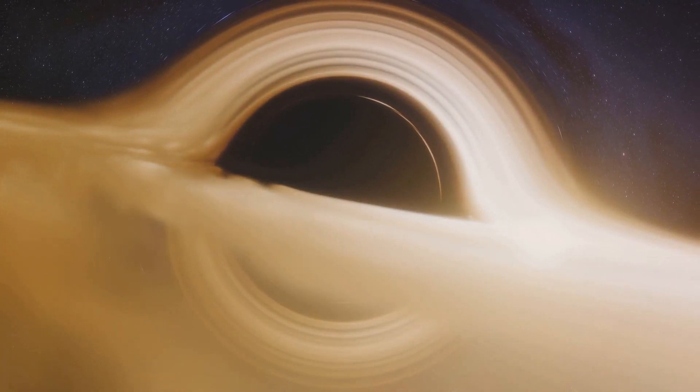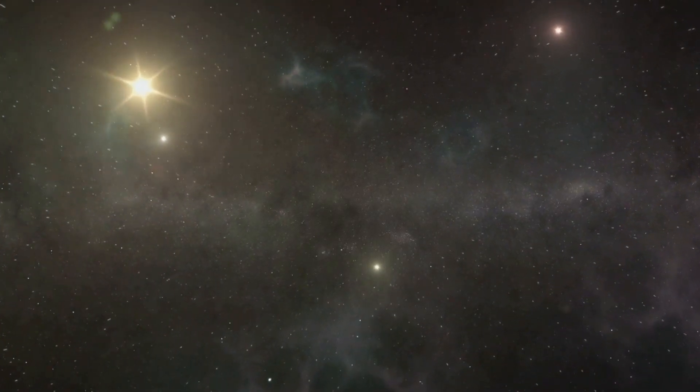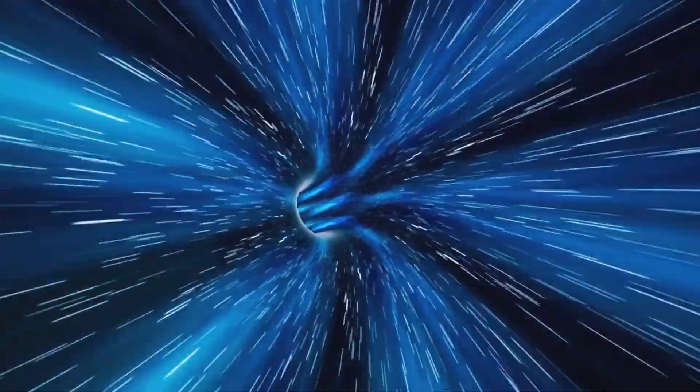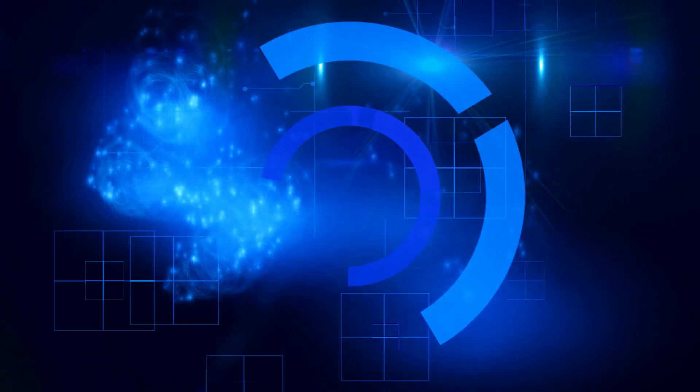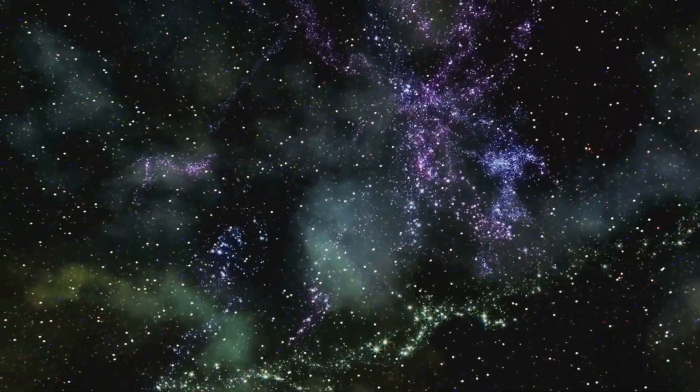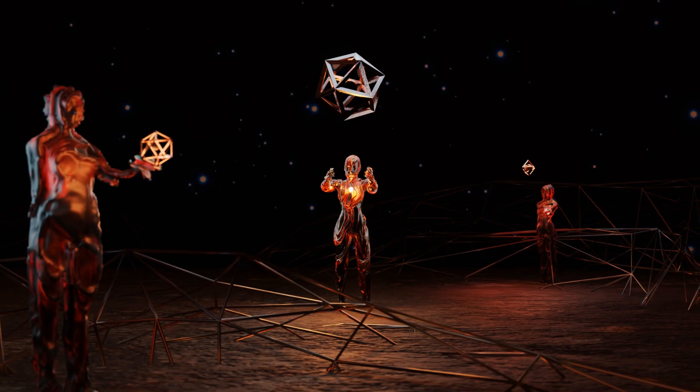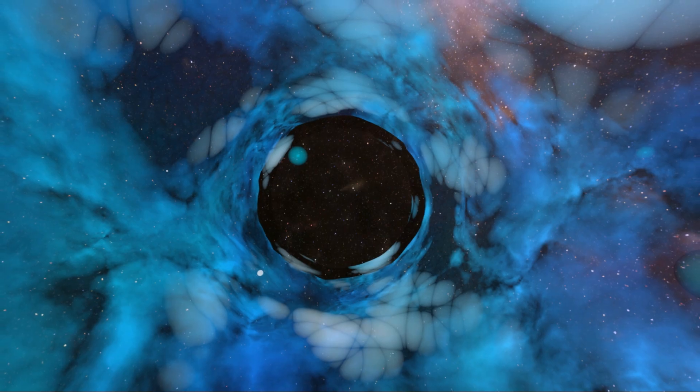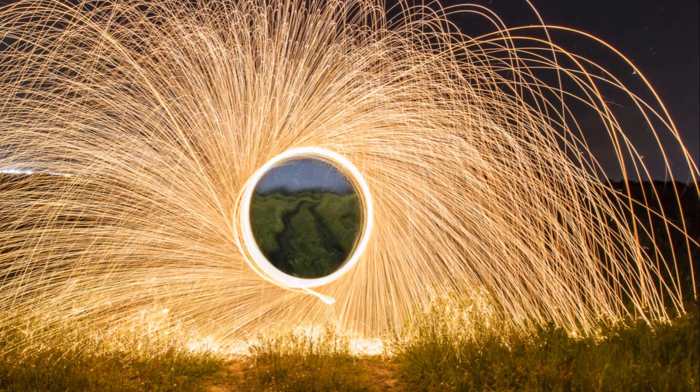The heavier the object, the greater the warping. And this warping, this bending, this distortion, it's not just happening in an abstract, theoretical space. It's happening right here, right now, all around us. It's happening in the space that you occupy, in the time that you experience. And this bending and warping of the fabric of the universe has a profound effect. It changes the way we move, the way we experience the world. Because when space and time warp, they create a kind of force that pulls objects towards each other. And this force, this pull, this attraction, we have a name for it. We call it gravity.